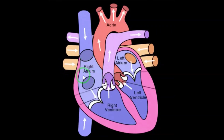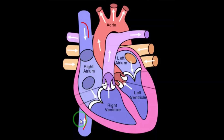The right atrium receives deoxygenated blood from different parts of the body through the main veins: the superior vena cava, inferior vena cava, and coronary sinus. The pulmonary veins bring oxygenated blood to the left atrium from the lungs.